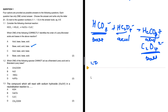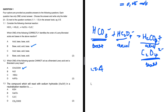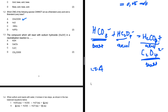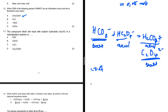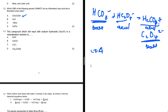Question 1.3 says the compound which will react with sodium hydroxide in a neutralization reaction. For a neutralization reaction we need an acid and a base, and sodium hydroxide is a base. The options include KOH, CaCO₃, C₂O₄²⁻, and CH₃COOH. The fourth option, CH₃COOH, is an acid, so our answer is letter D.